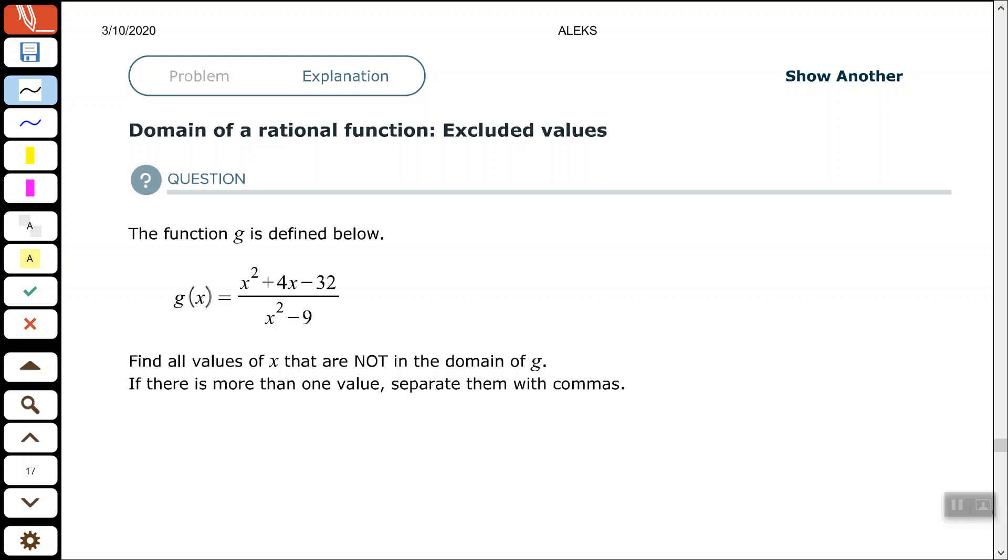Hey, good people. Arthur Morris here. Hope all is well. In this video, we're going to look at the domain of a rational function. We want to find the excluded values. That's what we want to do.